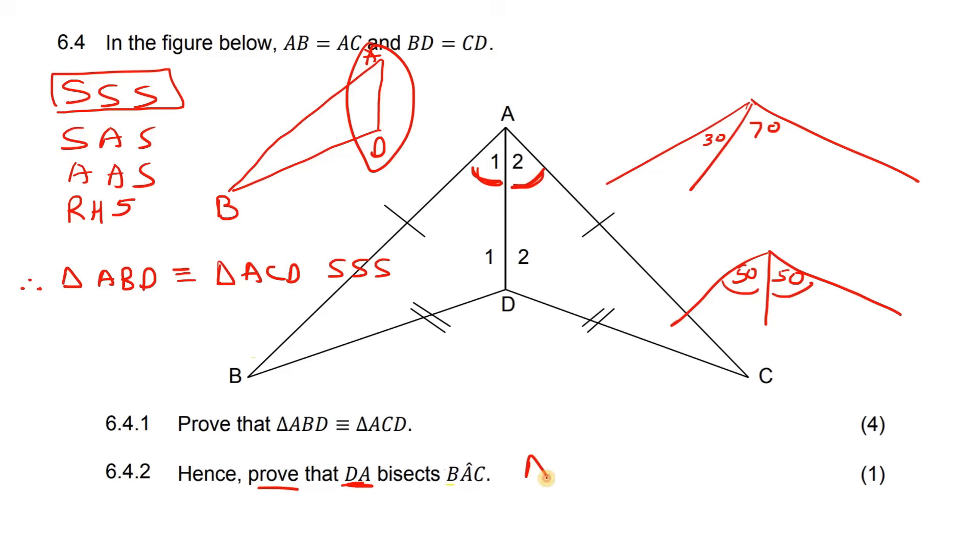So, we can say that triangle ABD is congruent to triangle ACD. Why? Because we've proven that. Then you can say, therefore, angle A1 has to be the same as angle A2. And that is all you say.